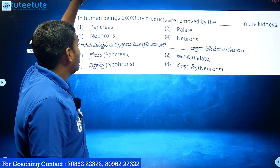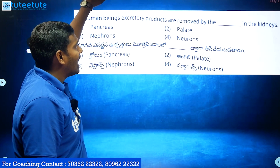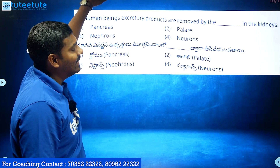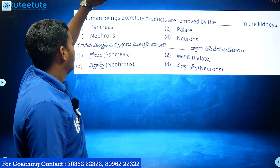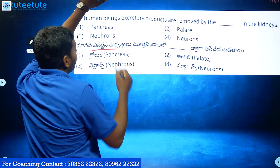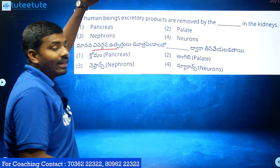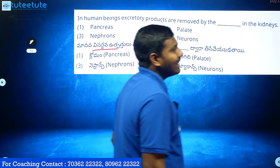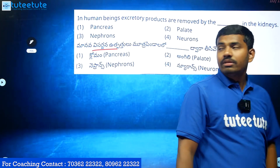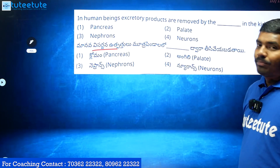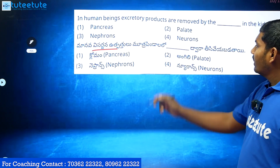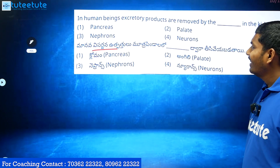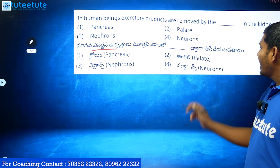In human beings, excretory products are removed by the kidneys. The kidneys contain nephrons and neurons. The pancreas is also mentioned in relation to this process.